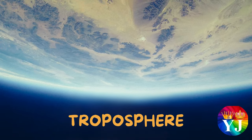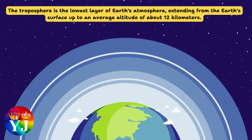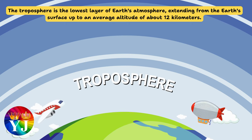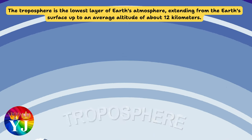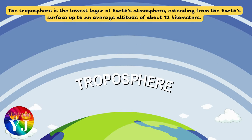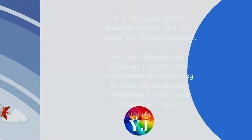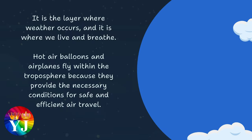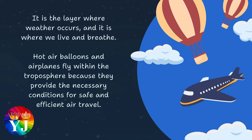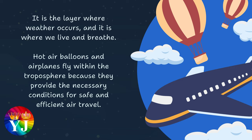The troposphere is the lowest layer of Earth's atmosphere, extending from the Earth's surface up to an average altitude of about 12 kilometers. It is the layer where weather occurs and where we live and breathe. Hot air balloons and airplanes fly within the troposphere because they provide the necessary conditions for safe and efficient air travel.